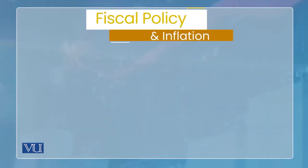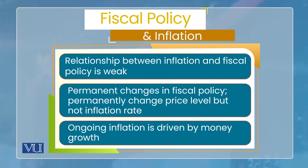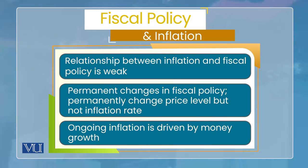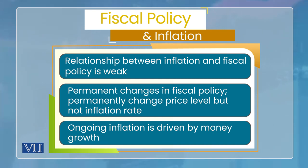تو fiscal policy اور inflation کا جو net result ہے اسے summarize کرتے ہیں: relationship between fiscal policy and inflation is weak — جب تک money supply ساتھ نہ بڑھے تب تک long run میں inflation weak ہو جاتا ہے. So: permanent change in fiscal policy leads to permanent change in price level, but no change in inflation rate in the long run. Ongoing inflation is driven only by money supply.